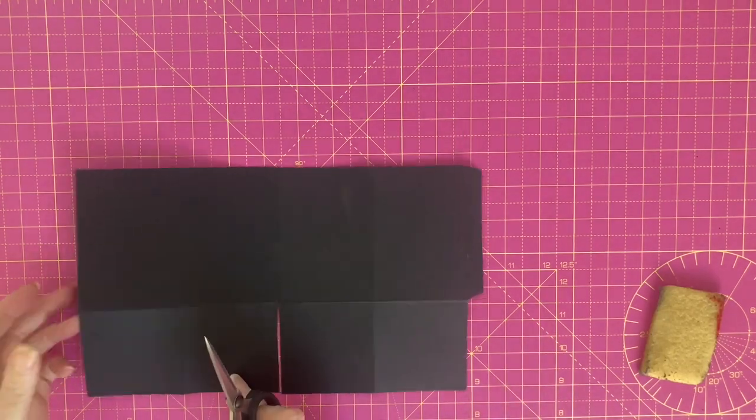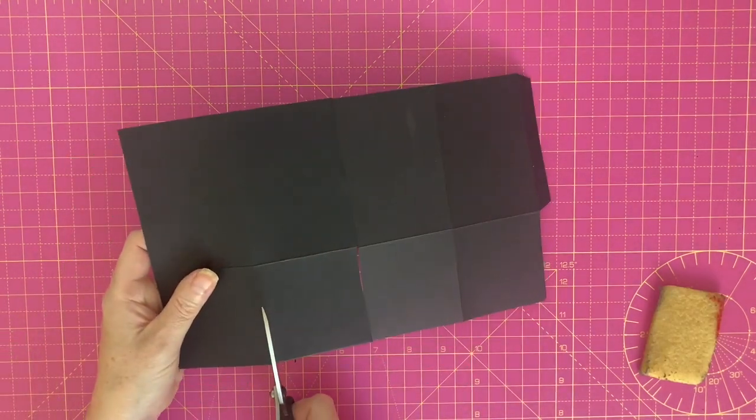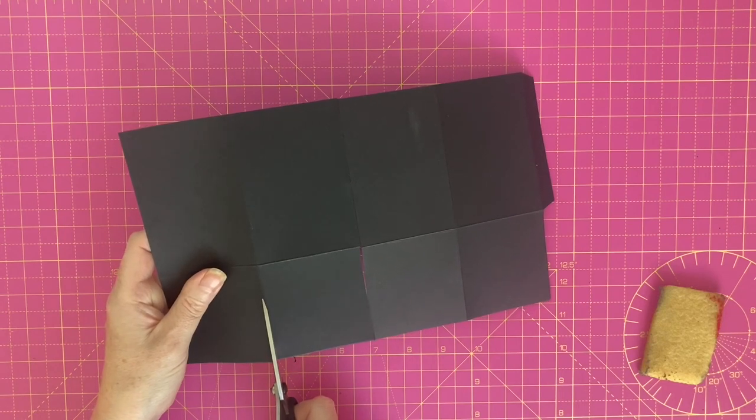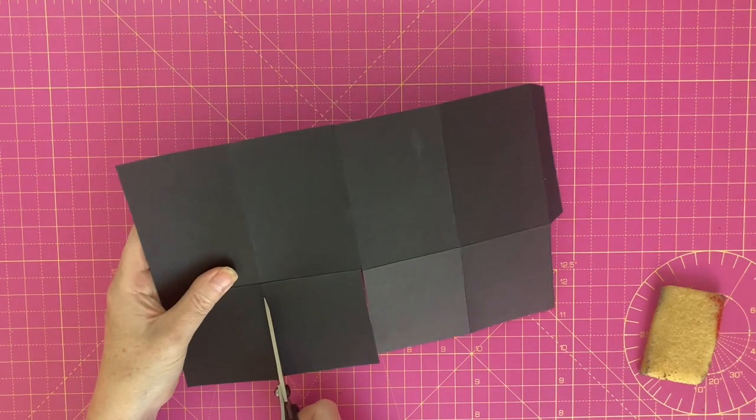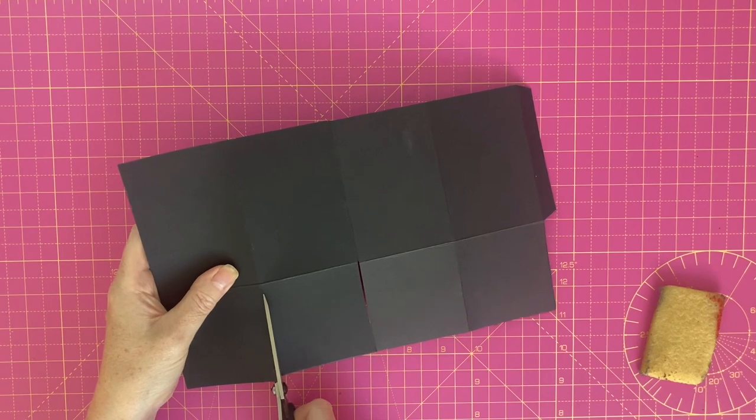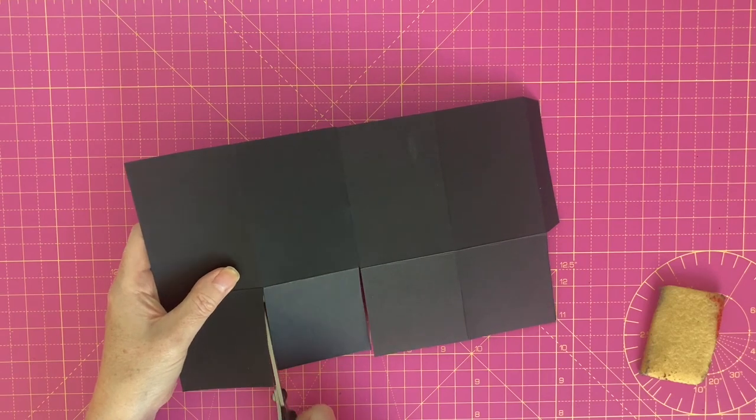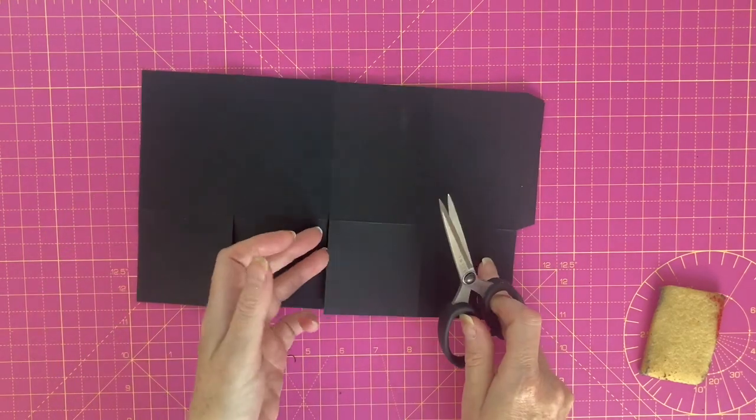Now what I'm going to do is I'm going to cut up the score lines of each of the bottom tabs to the horizontal score line.